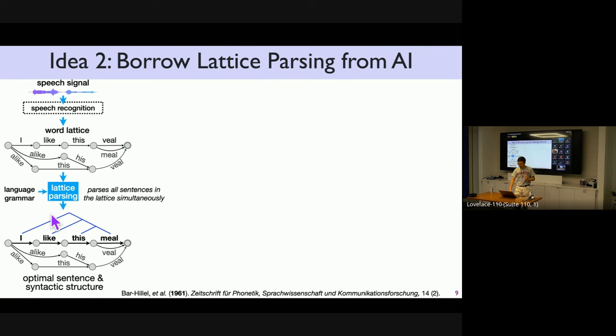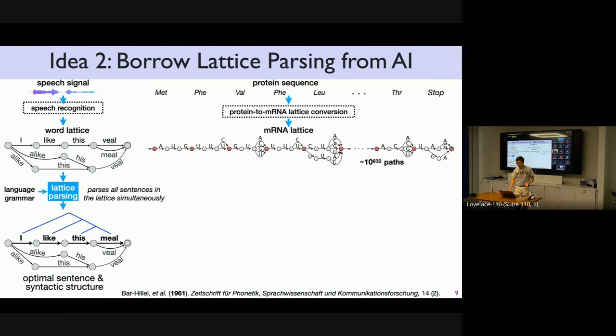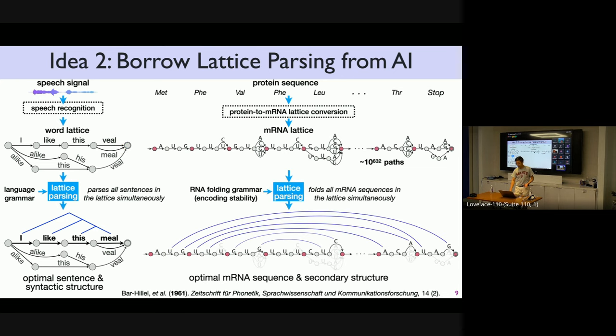We just took the same algorithm, except that the ingredients are now different. So the input is not a word lattice, but an mRNA lattice. And the grammar is also not an English grammar, but an RNA folding grammar. This RNA folding grammar looks very much like an English grammar, except that the parameters are different. The parameters are not about grammaticality, but now more about stability. Like if you form an AU pair, how much energy do you get? If you form a GC pair, how much energy do you get? Then you run the same algorithm. The algorithm doesn't change. And you can fold all these sentences together and find the most stable one, along with the secondary structure, in just about 11 minutes.